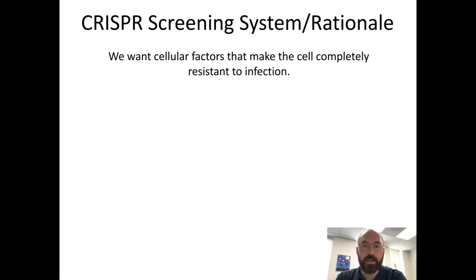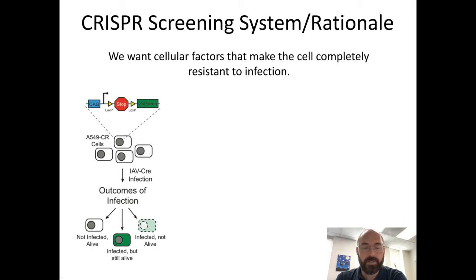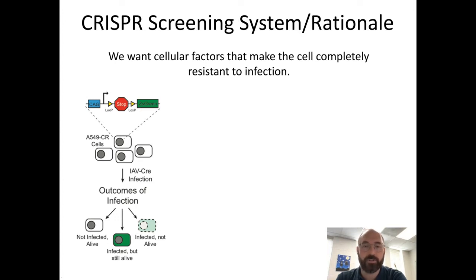We wanted to find cellular factors that when upregulated would make the cell completely resistant to infection. We used a reporter system with a transgenic cassette — a promoter followed by a LOX-stop-LOX cassette and then a green fluorescent protein. We have an influenza virus that expresses Cre recombinase, which binds those LoxP sites and removes the stop cassette, so after viral infection the cells turn green. This is a very sensitive way to label any cell that's ever seen infection.